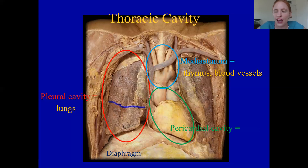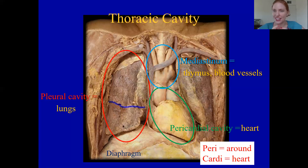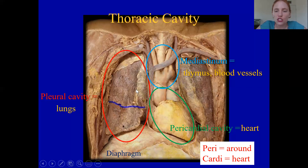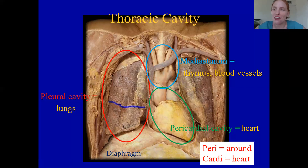The last sub-cavity of the thoracic cavity is the pericardial cavity, which contains only one organ: the heart. Breaking down the word — 'peri' means around (like perimeter), and 'cardi' means heart. So the pericardial cavity is the cavity that surrounds the heart. In anatomy, names describe what they are, so if you know what the little word parts mean, you have a description right there.